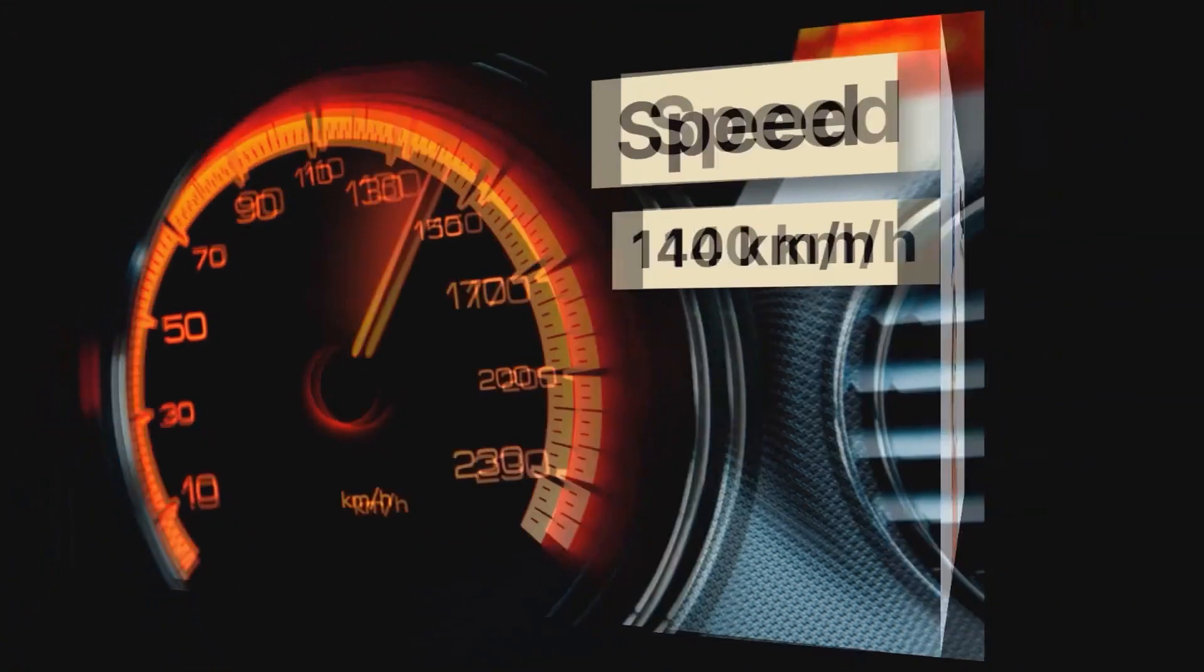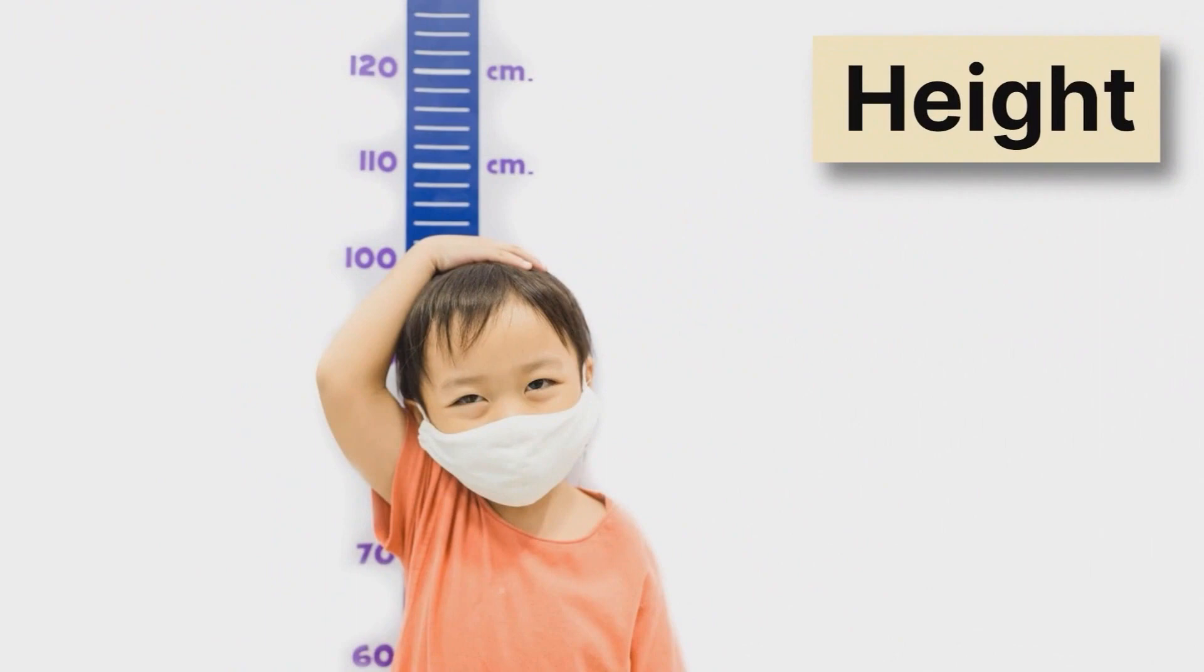Let's look at another example. Height. Height is also a scalar. We're measuring this boy's height on the wall, and if we read it carefully, it looks to be about 100 centimeters. Again, it has the size there, 100, and a unit, centimeters. So it's a scalar.